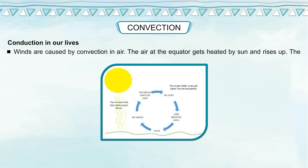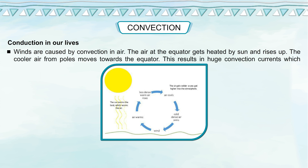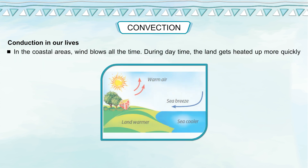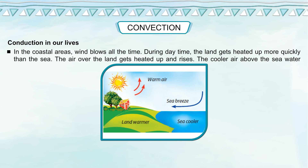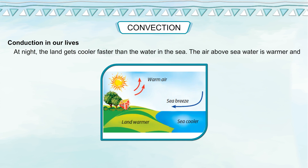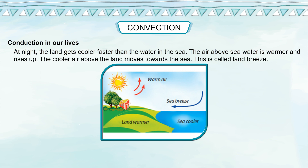Winds are caused by convection in air. The air at the equator gets heated by the sun and rises up; cooler air from the poles moves towards the equator, resulting in huge convection currents which cause winds across oceans and continents. In coastal areas, wind blows all the time. During daytime, land heats up more quickly than the sea — the air over land rises, and cooler air from above the sea moves towards the land; this is called sea breeze. At night, land cools faster than the sea — air above sea water is warmer and rises, while cooler air above land moves towards the sea; this is called land breeze.